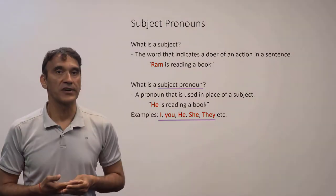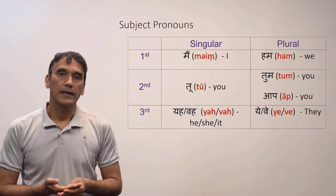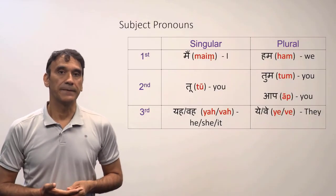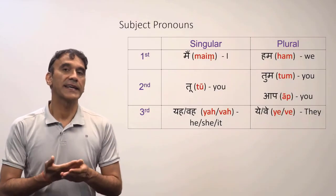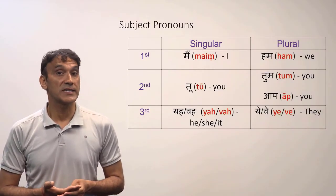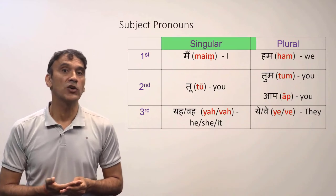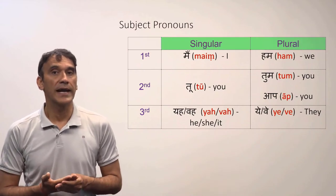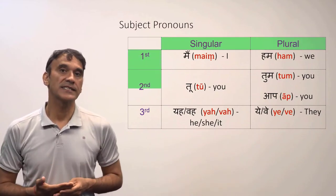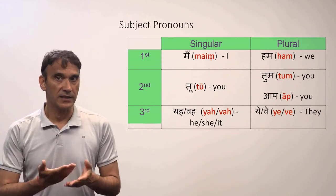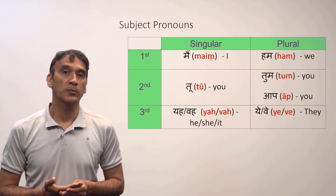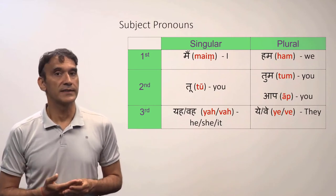Just like English, the Hindi language also has two numbers — singular and plural — and three persons: first person, second person, and third person. The Hindi subject pronouns also belong to these categories.